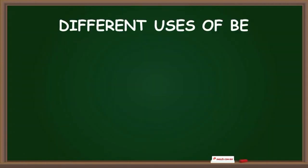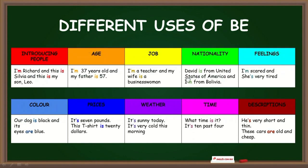Como ya hemos visto todas las formas del verbo to be, ahora veremos los diferentes usos. We use the verb to be to introduce people — usamos el verbo to be para presentar a personas. For example: I'm Richard, and this is Silvia, and this is my son Leo. We use it to talk about age — lo usamos para hablar sobre la edad. I am 37 years old and my father is 57. Aquí no vamos a usar el verbo have/tener, sino el verbo to be para hablar sobre edad.